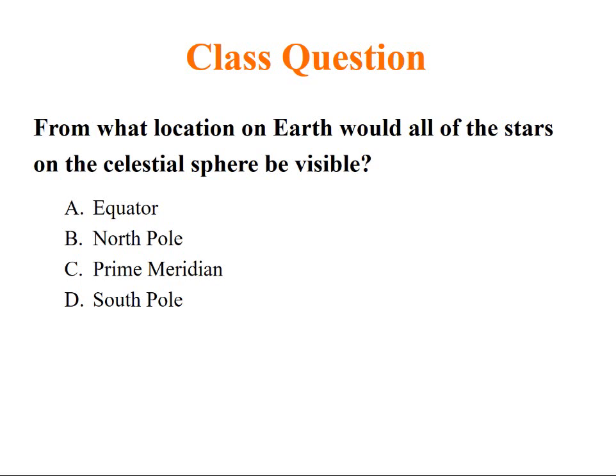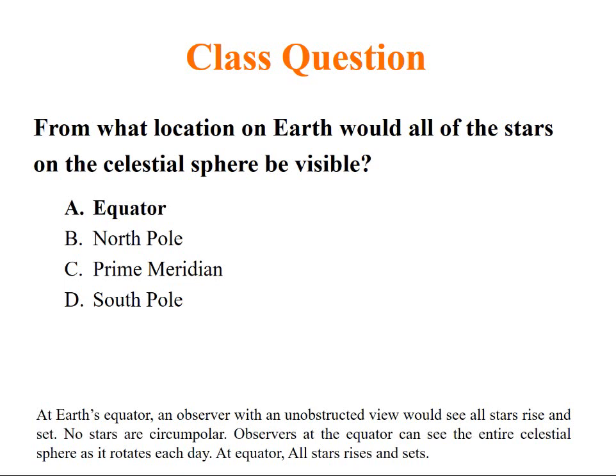Question: from what location on Earth would all stars on the celestial sphere be visible? The answer is equator. At equator, an observer with an unobstructed view would see all stars rise and set.